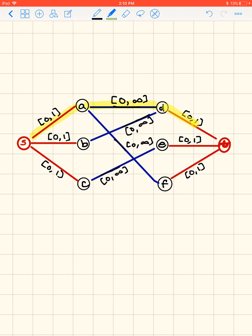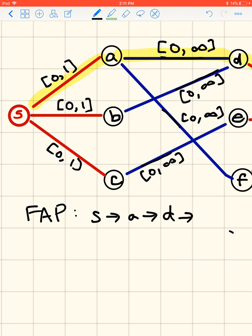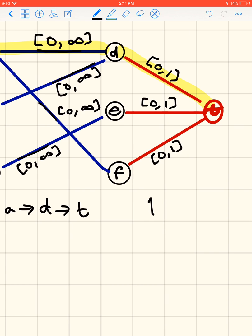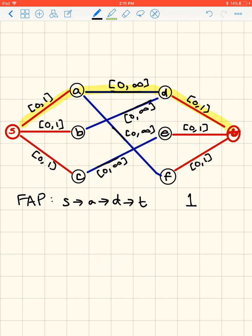You can say, oh look, there's a flow augmenting path right there. There's an unused capacity of 1 from S and A, from infinity from A to D, and 1 from D to T. So we also want to make sure we always write down our flow augmenting paths, at least, because otherwise you can't verify your results. So we're going to go from S to A to D to T, and I'm not going to worry about the amount of the flow being too formal because it's always 1 in these examples.